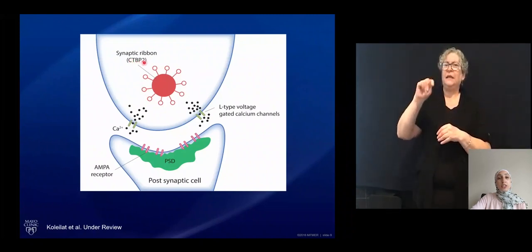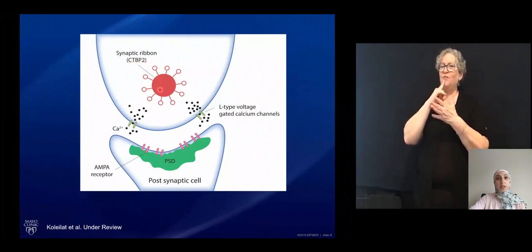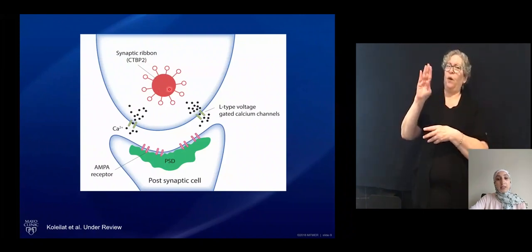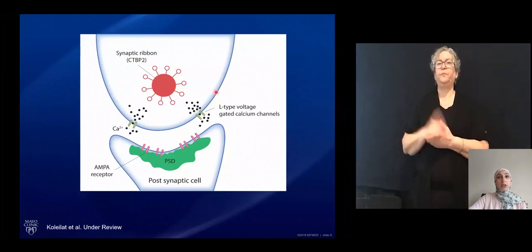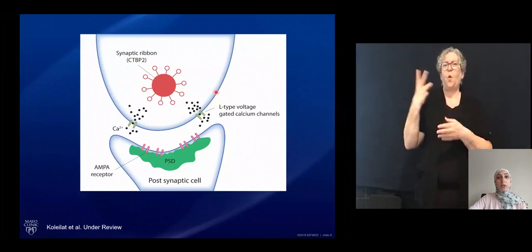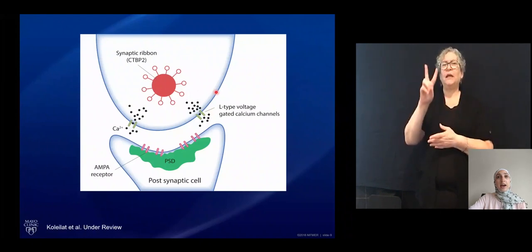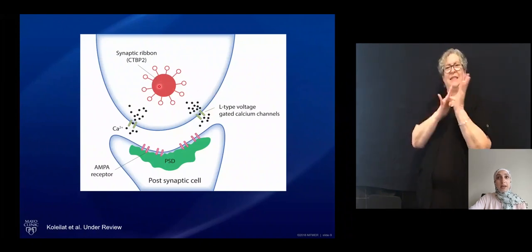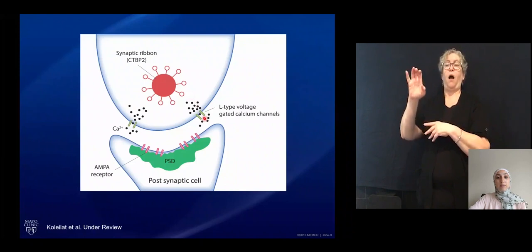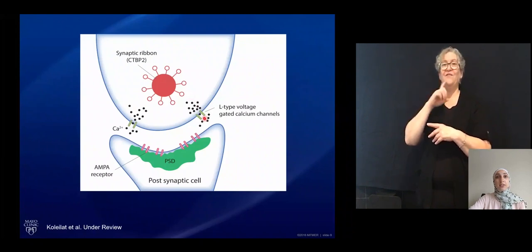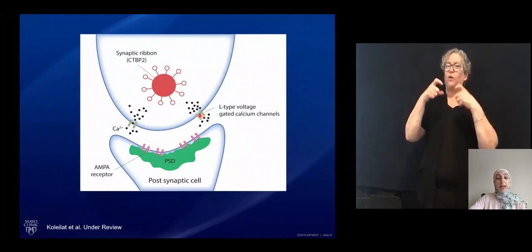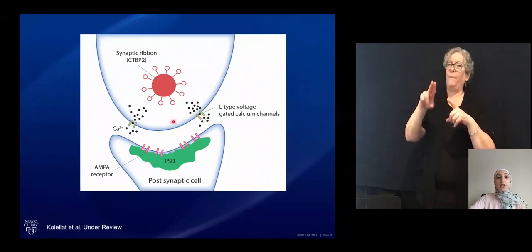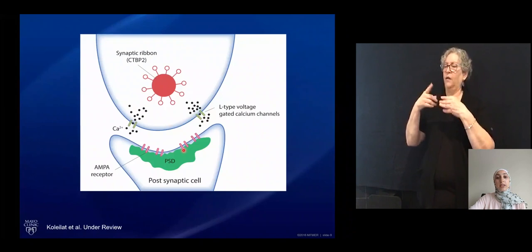CTBP2 is the gene that is spliced to produce the protein called ribeye. An investigator at WashU, Dr. Lavinia Sheets, identified in 2011 that this central protein ribeye is required for L-type voltage-gated calcium channels to localize and for innervation of the postsynaptic cell.